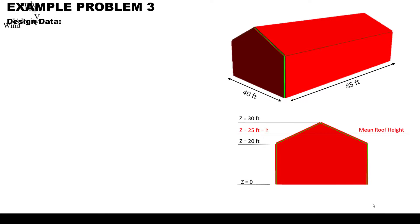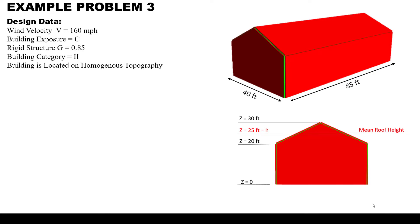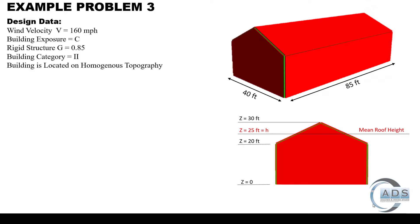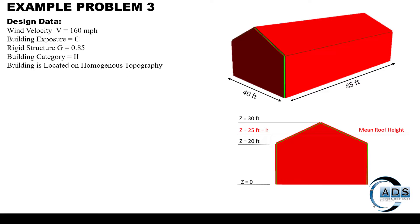The design data for example problem 3 is shown. Wind velocity is 160 mph, building exposure is C, and it is considered a rigid structure so its gust effect factor is taken as 0.85. Building category is 2 and the building is located on homogeneous topography. These are the dimensions and the elevation in which all the levels are mentioned along with the mean roof height.